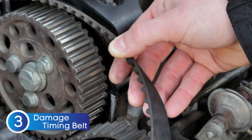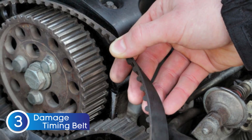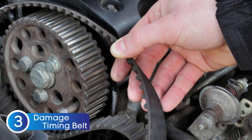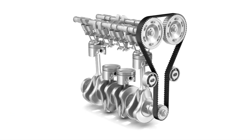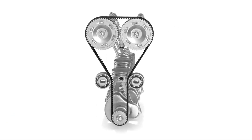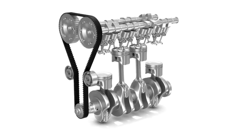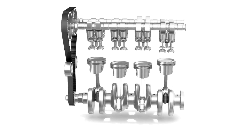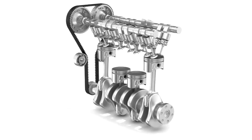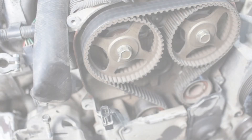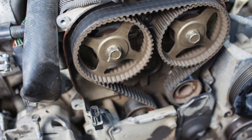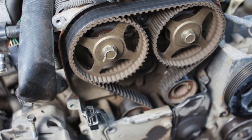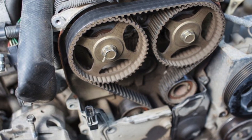The third cause is a faulty timing belt or chain. The camshaft is driven by the crankshaft through either a timing belt or a timing chain. If that belt or chain jumps a tooth or becomes misaligned, even slightly, it throws off the precise synchronization between the camshaft and crankshaft. Since the camshaft position sensor relies on accurate timing to send signals to the ECU, any misalignment can mimic a sensor failure and trigger the P0347 code.